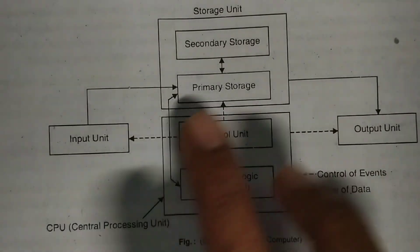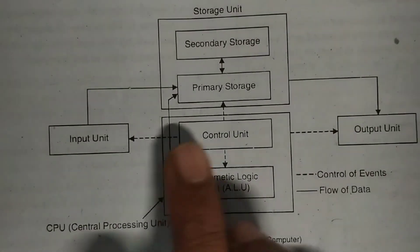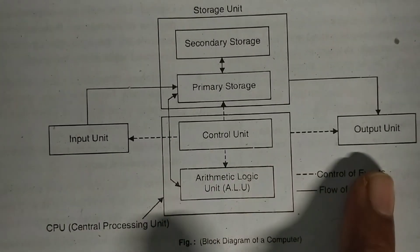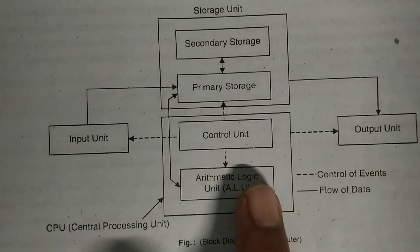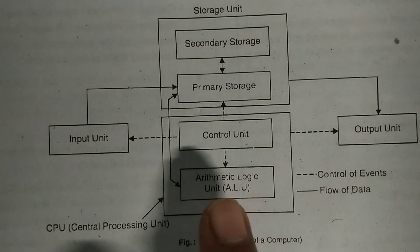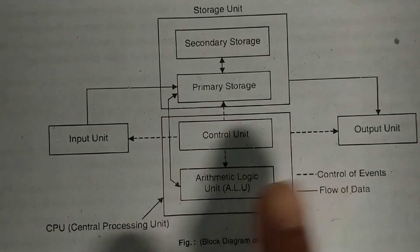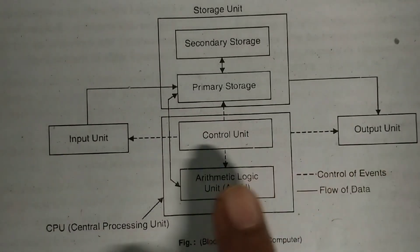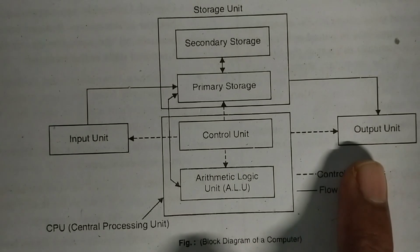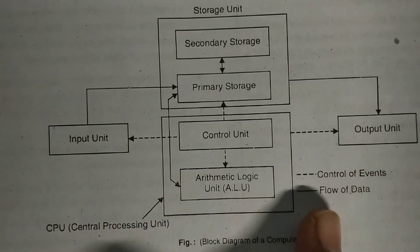The central processing unit processes data and instructions. The output is produced in binary form — 0s and 1s — and is converted into human-readable form through output devices. Input and output devices will be covered in the next class.